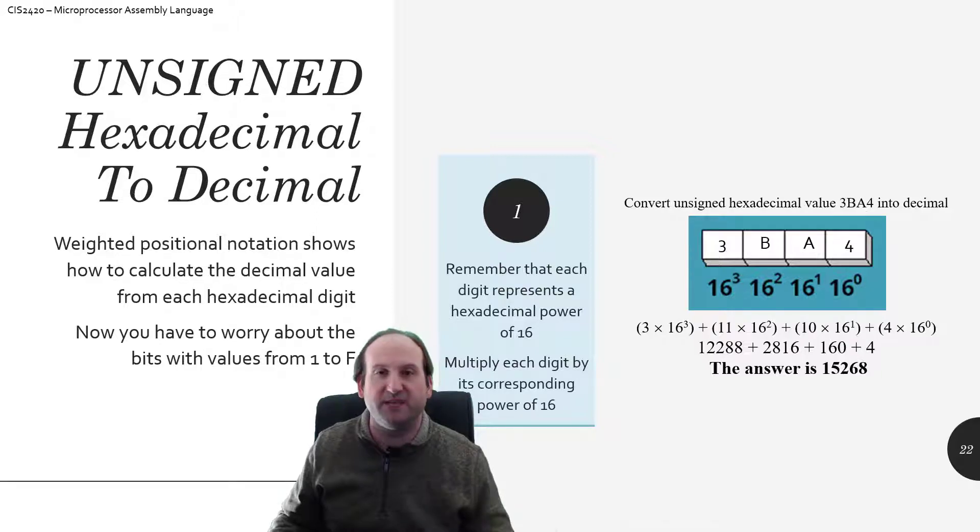Same algorithm, different problem. So, we're trying to convert 3BA4 from hexadecimal into decimal. So, same thing as before. We take a look at the 1's digit. That's a 4. So, 4 times 16 to the 0th power. We take a look at the second digit, A, which is 10. So, 10 times 16 to the 1st power. That's that digit.